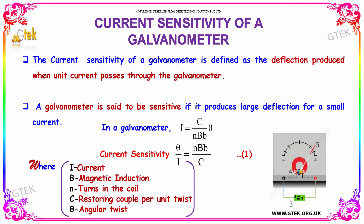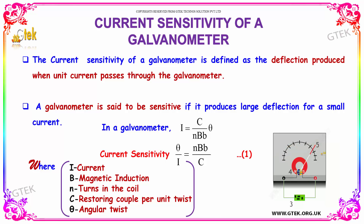The current sensitivity of a galvanometer is defined as the deflection produced when unit current passes through the galvanometer. A galvanometer is said to be sensitive if it produces a large deflection for a small current.